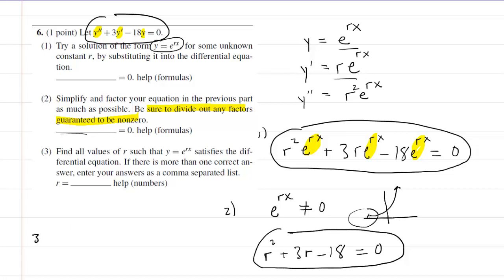And onto the third question, we need to find all values of r such that y equals e to the rx satisfies the differential equation. So basically, we're going to take this simplified version of the differential equation or simplified solution to it and solve for r. So that's just going to involve factoring. And that's a skill we've had for a long time now. So we just need two numbers that add to make 3, but also multiply to make negative 18. So those numbers would be 6 and negative 3. So we'll have r plus 6 times r minus 3. We'll set each one of those equal to zero. And when we do that, we would see that r could either equal negative 6 or r could equal positive 3. So these would be the answers to the third question.